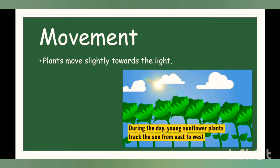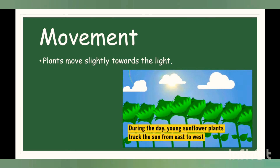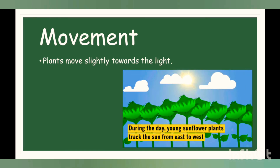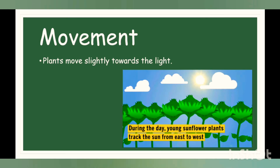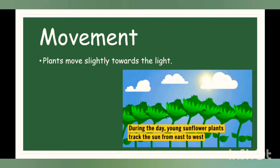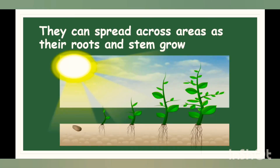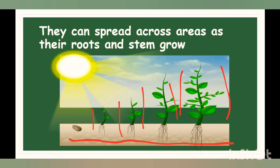Movement is our main focus. Plants move slightly towards the light — this is also written on your learner's book page number 30. We have discussed earlier that young sunflower plants track the sun from east to west. As we know, the sun travels from east to west during the day and the sunflower follows the sun. Plants can also spread across areas as their roots and stem grow, and you can see a growing plant whose roots and stem are growing and spreading. This is movement in plants.